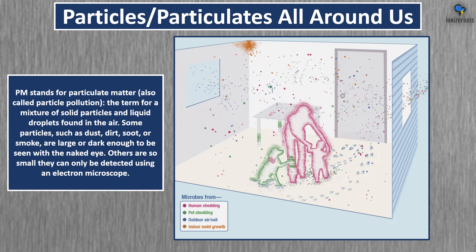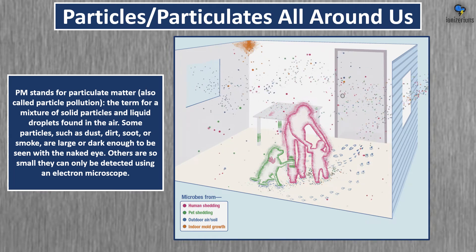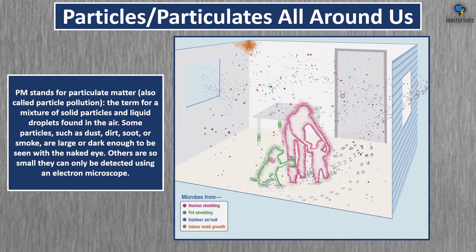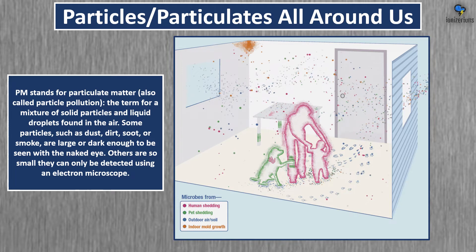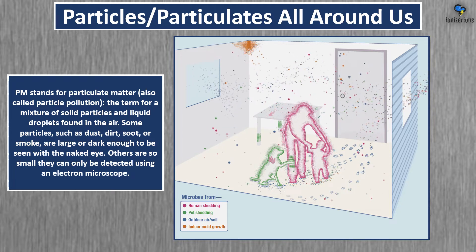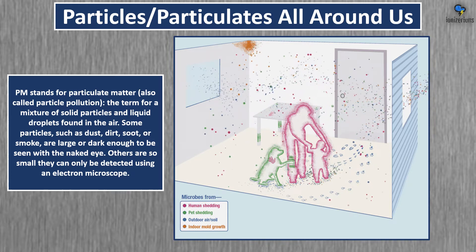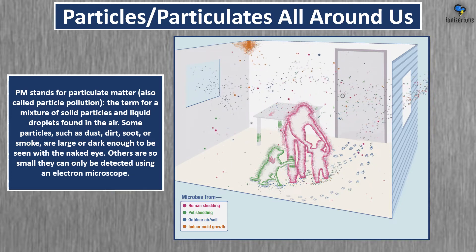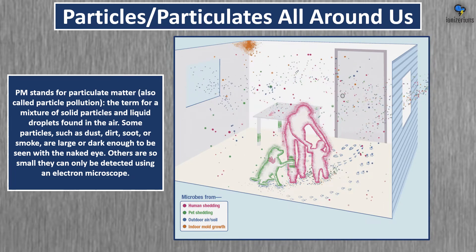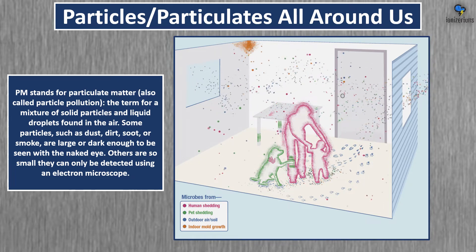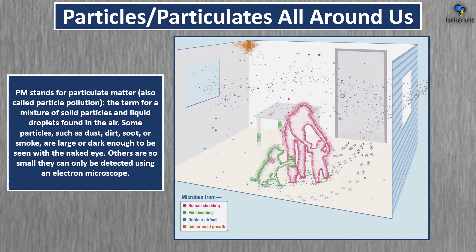Particles and particulates are all around us. As you can see from this image, particles can come from human shedding, pet shedding, outdoor air, soil, and indoor mold growth. Particles from outdoors can come indoors, and particles that originate indoors can go right back outside.